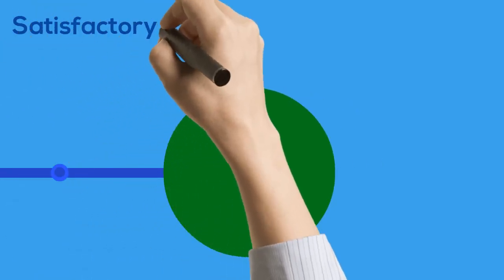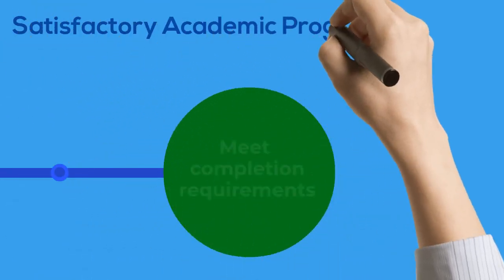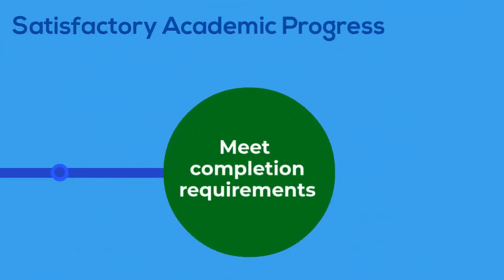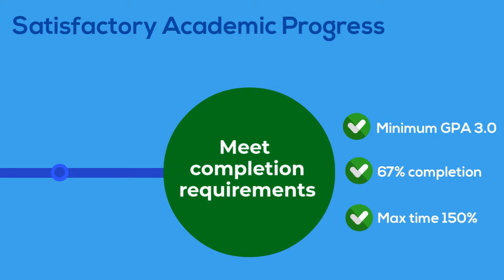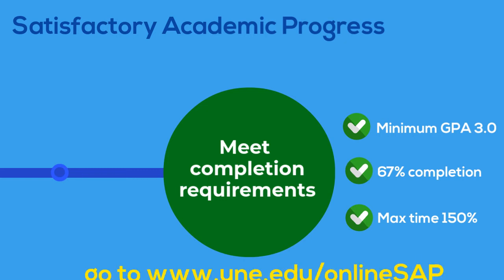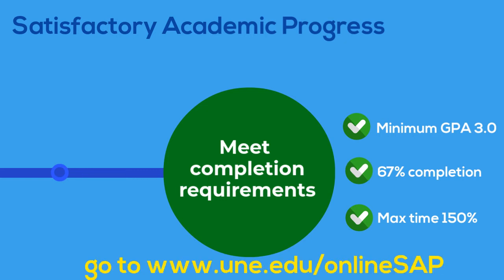You must make satisfactory academic progress to be eligible for aid. Achieve a minimum grade point average, pass a certain percentage of courses you take, and complete your program within a certain time frame. We will send email warnings if you are not meeting any of these standards. For more information, go to our website or contact us.